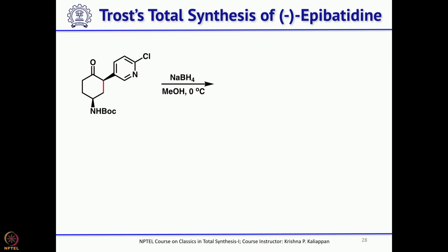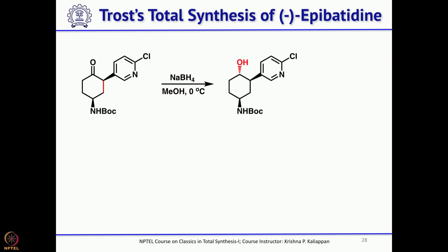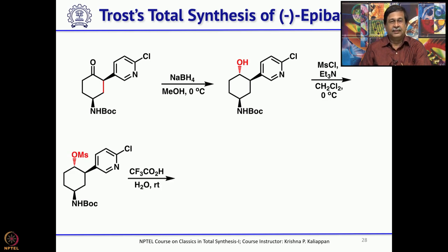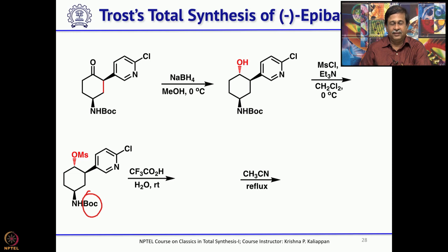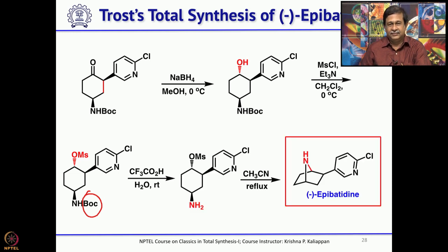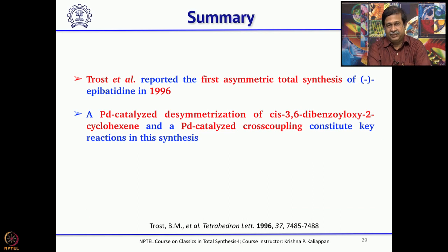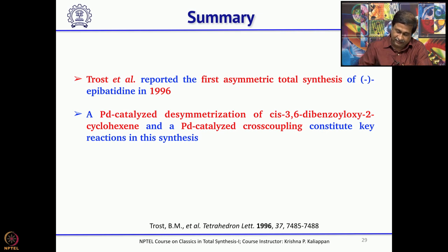Reduction of the ketone with sodium borohydride gave the alcohol. The alcohol was then converted into a good leaving group by treating with mesyl chloride. Treatment of this mesylate with trifluoroacetic acid first removed the Boc group to give the amino alcohol. Once the amino alcohol was in hand, refluxing with acetonitrile underwent spontaneous intramolecular SN2 reaction to provide minus-epibatidine directly. Thus, Trost accomplished this first asymmetric total synthesis in about 10 steps with an overall yield of about 13 percent.